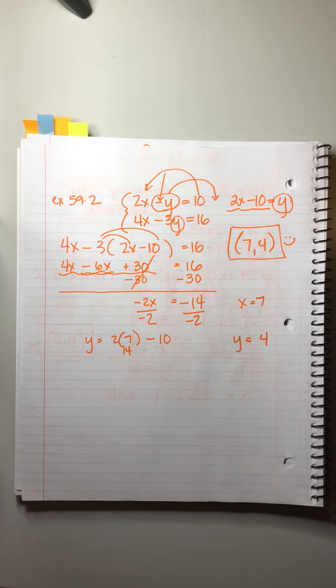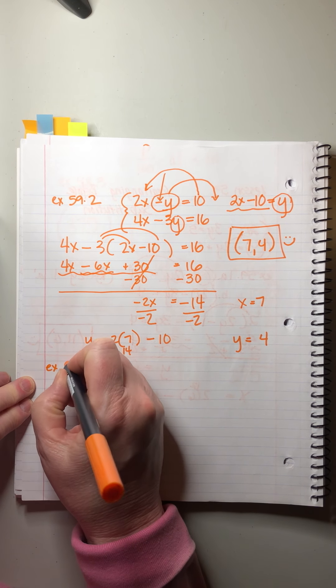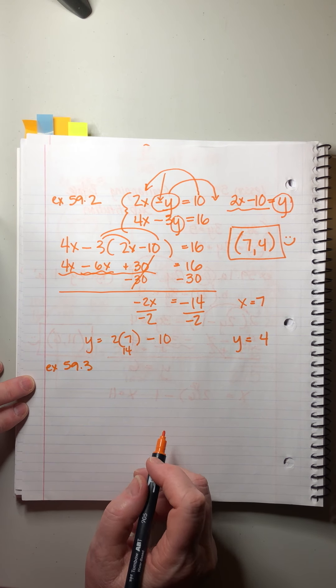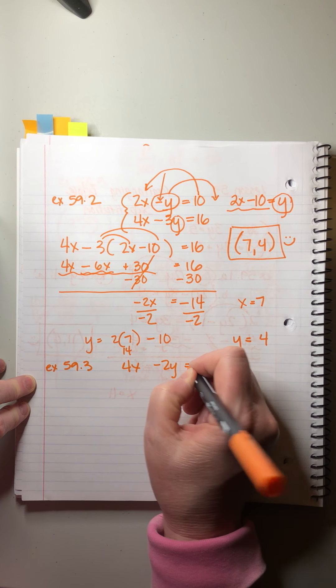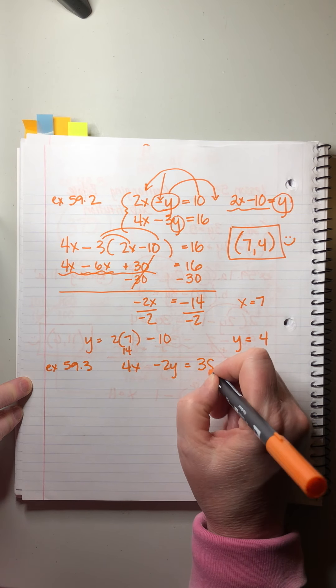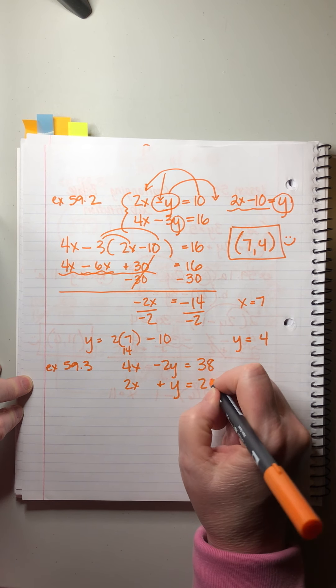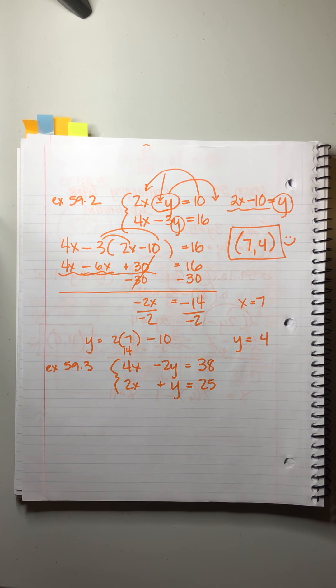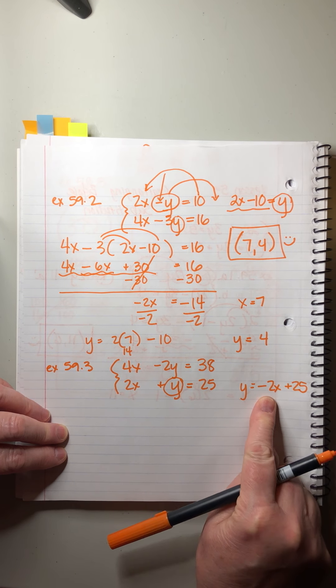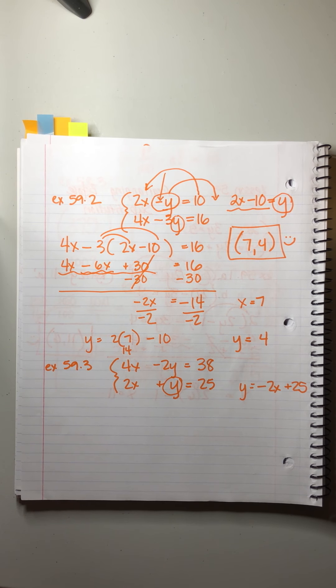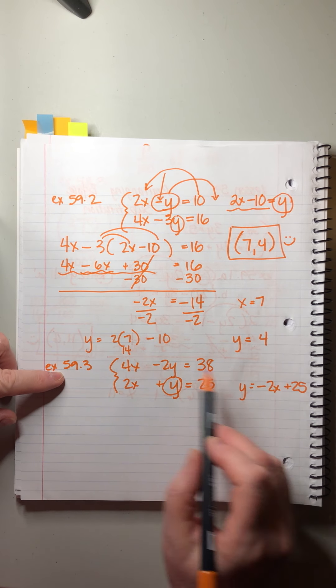There's one more example — Example 59.3. It has slightly bigger numbers but it's no harder. The system is: 4x minus 2y equals 38, and 2x plus y equals 25. There's our y without a coefficient. We subtract the 2x, so y equals negative 2x plus 25. We keep x first then the number in descending order — it helps when we distribute.